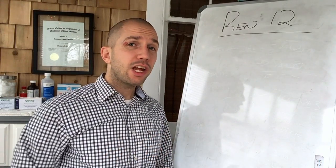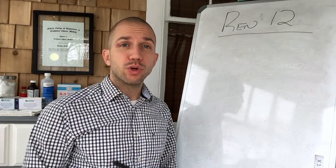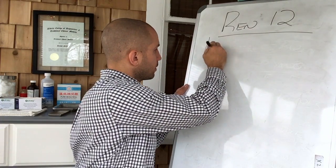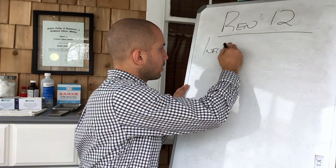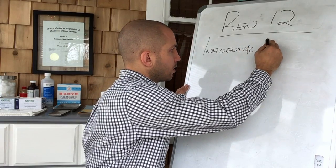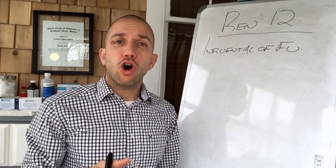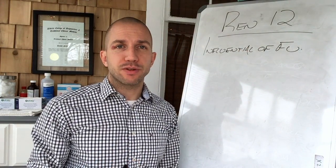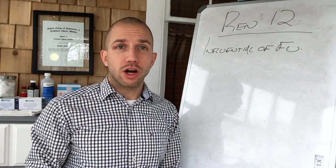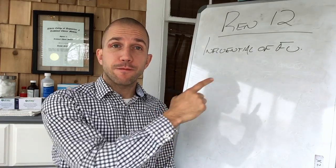Welcome back. Today, we're going to review REN-12, which is influential of Fu. If you recall from the last episode, we said that Zang is not Yang in regards to LIVER-13, so that means that Fu is Yang.